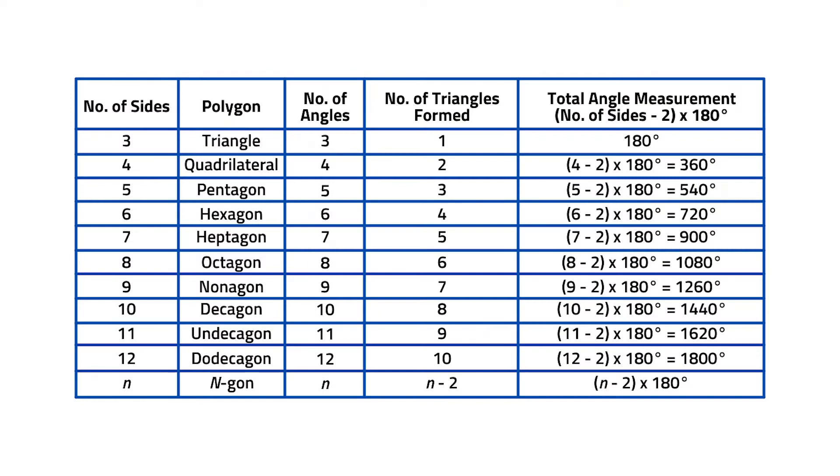Polygons are named according to the number of their sides. By looking at this table, we can identify the number of angles, triangles formed, and the total angle measurement of each polygon. Now, can you identify the following polygons according to the number of their sides? Come on, let's go!